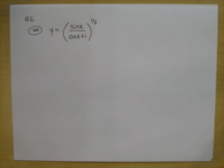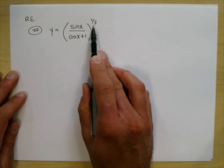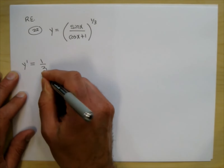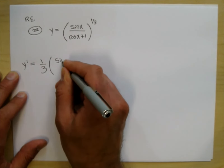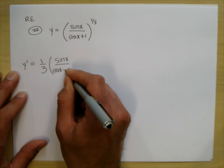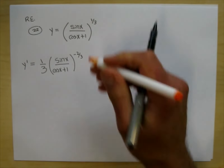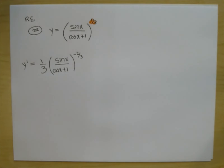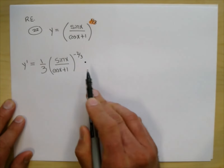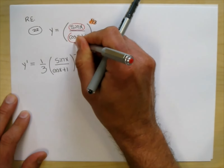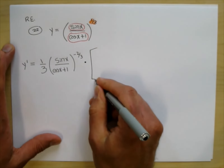Let's practice more derivatives. Problem number 22 from the Review Exercises — find the derivative. This right here is the chain rule. y prime: something to the 1/3 is 1/3 times that something raised to the negative 2/3. I got negative 2/3 by going 1/3 minus 1. Now I'm going to multiply by the derivative of this quotient, so we use the quotient rule.